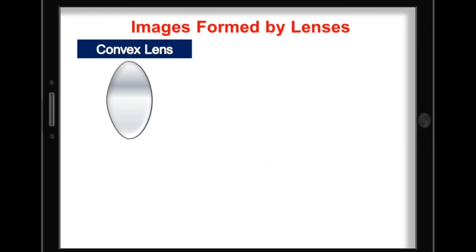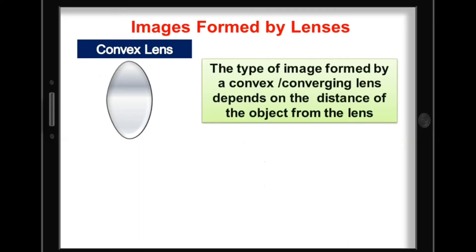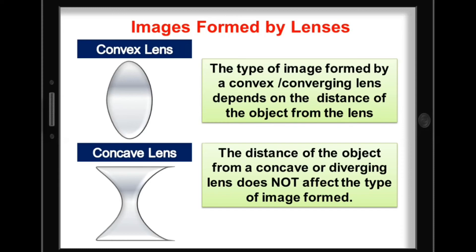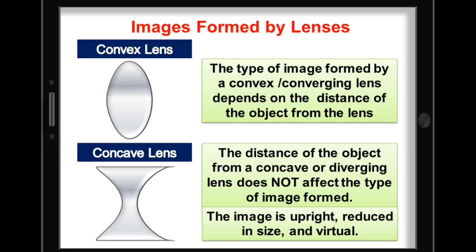Always remember for the images formed by lenses: the type of image formed by a convex or converging lens depends on the distance of the object from the lens. For a concave or diverging lens, the distance of the object does not affect the type of image formed — the image is always upright, reduced in size, and virtual.